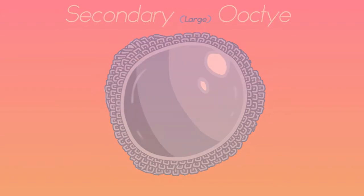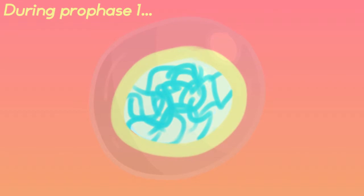Before this, the process of meiosis I has taken place. Now let's talk about that. During prophase I, the chromatin condense into chromosomes.